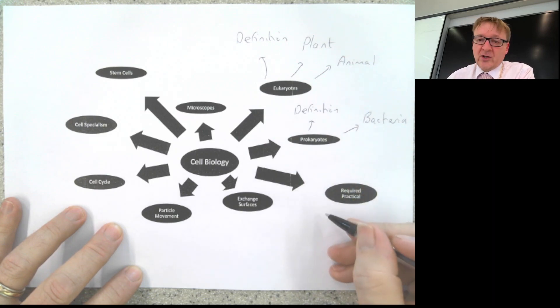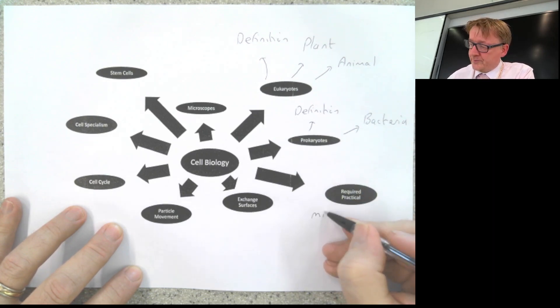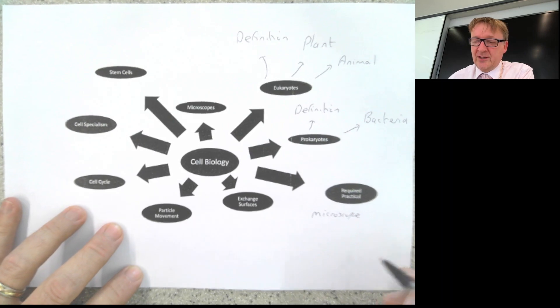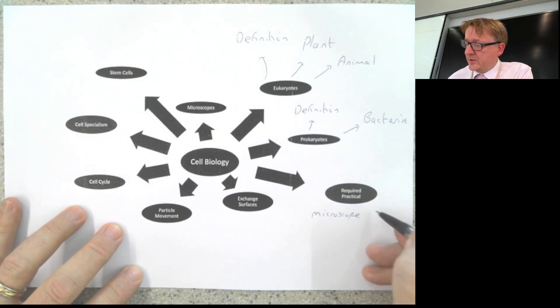There are two required practicals. First, the microscope practical, where you need to be able to prepare an onion slide and know how to use a microscope. Second, the osmosis required practical, which is about the potato. You need to know the method, the variables, and what the graph looks like.